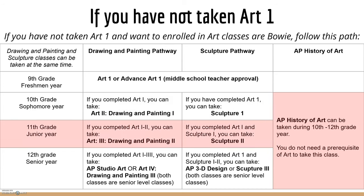Your junior year, if you have completed Art 1 and level 2 art classes, you can enroll in Art 3, Drawing and Painting 2, or Sculpture 2 as long as you've completed Sculpture 1. Your senior year, if you completed Art 1 through 3, you can take AP Studio Art or Art 4 Drawing and Painting 3. Both are senior level classes, though Art 4 will have a few juniors depending on where students are within their core pathway.